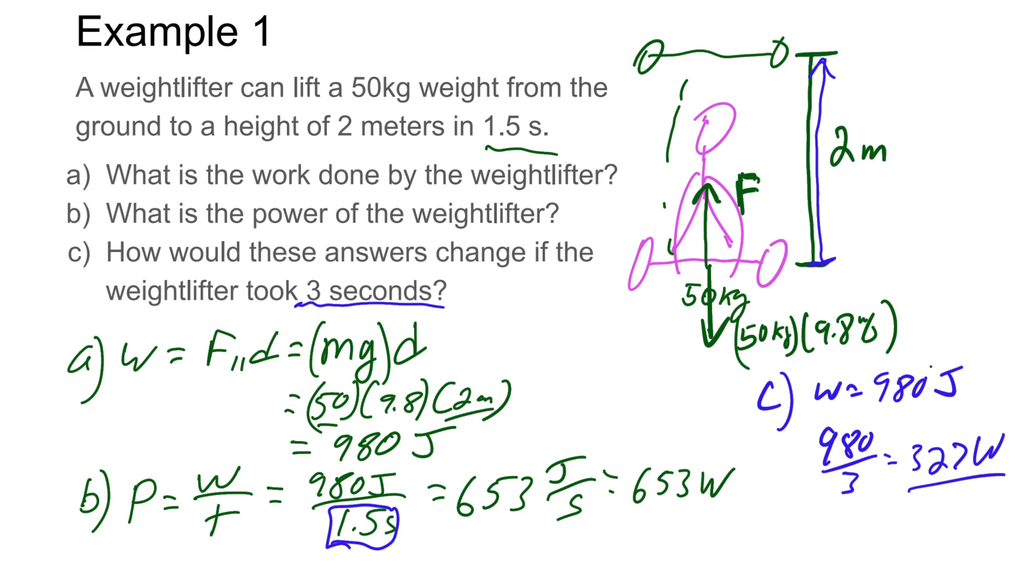Let's think about this concept. Power is how quickly you're able to do the work. Since we're doing the same work, if we're able to do it faster, like this weightlifter can do it in 1.5 seconds, they are more powerful compared to a second weightlifter who can only do it in three seconds. They are less powerful.